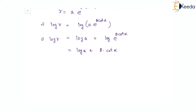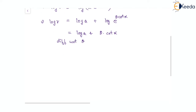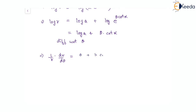Now differentiating both sides with respect to theta, we'll have 1/r times dr/dθ, applying the chain rule. Log of a is a constant so its derivative is 0, and the differentiation of theta is just 1, and cot α is a constant.